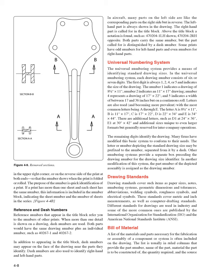Reference numbers in the title block refer to numbers of other prints. When more than one detail is shown on a drawing, dash numbers are used. Both parts would have the same drawing number plus an individual number, such as 40,267-1 and 40,267-2. Dash numbers may also appear on the face of the drawing near the parts they identify, and are used to identify right-hand and left-hand parts. In aircraft, many parts on the left side are like corresponding parts on the right side but in reverse. The left-hand part is shown in the drawing; the right-hand part is called for in the title block.